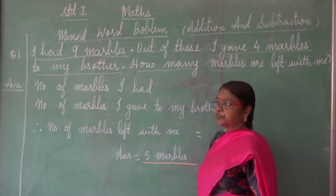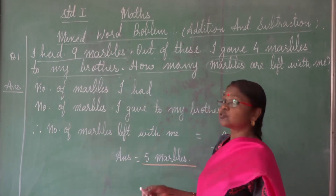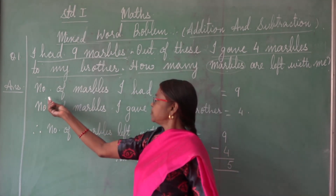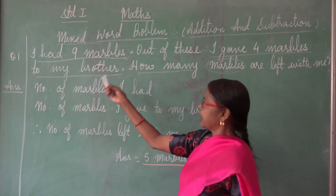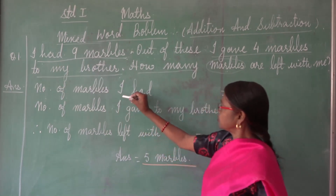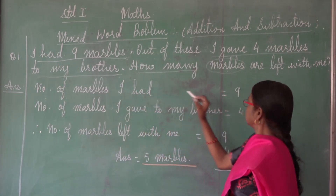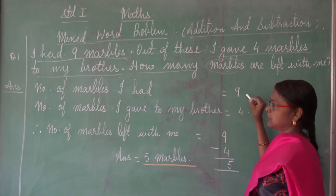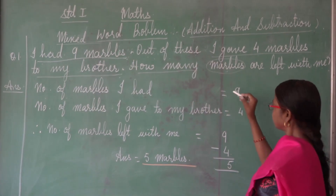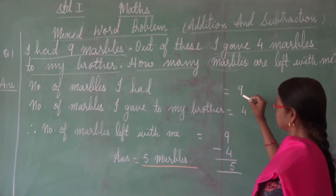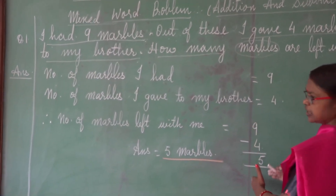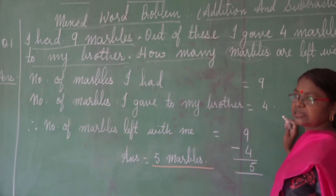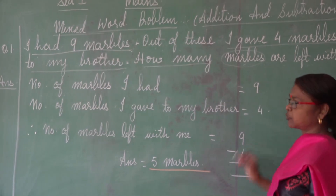So, there are many marbles, and for many, we use 'number of.' You see here — number of marbles. Who had? I had. So you need to write: I had. How many marbles did you have? Nine marbles. Why have I written so far away? Because all the numbers have to come in a sequence, in one line, and that will look nice and neat.